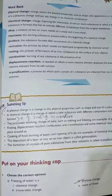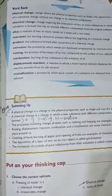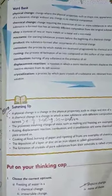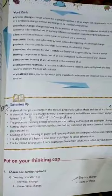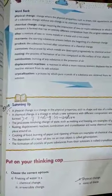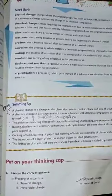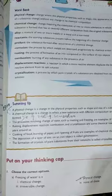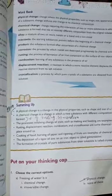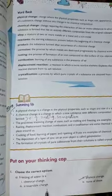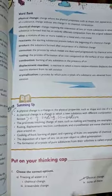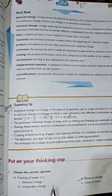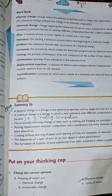Assalamualaikum students. Lesson number 5 — we are learning physical and chemical changes. Today we will answer questions on page number 71. You can choose the correct options; we have 4 options and we have to choose the correct ones.